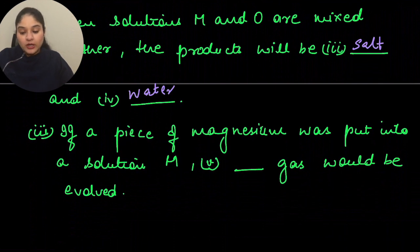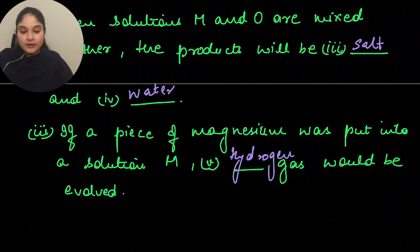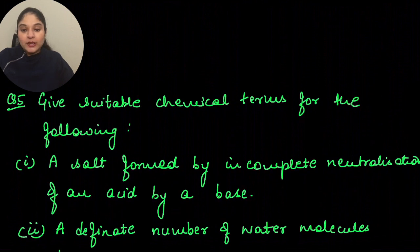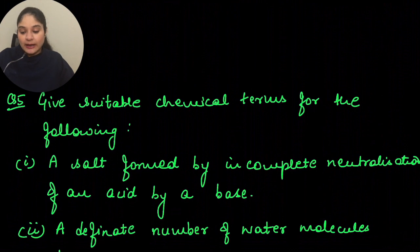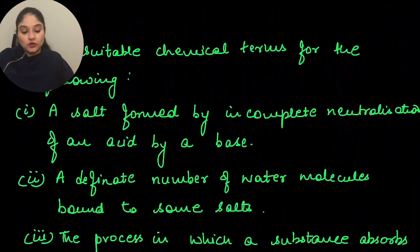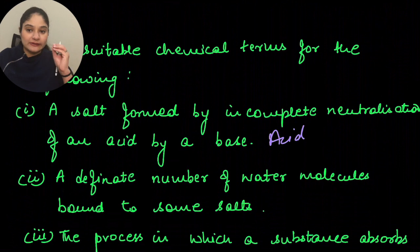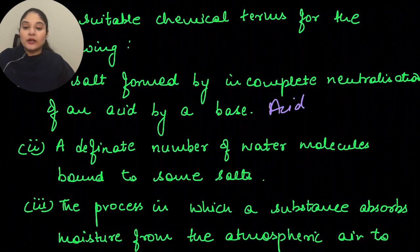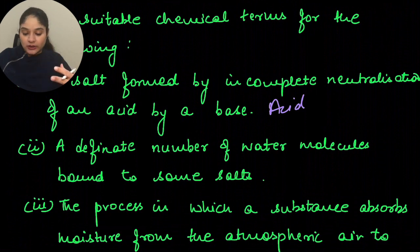Give suitable chemical terms for the following. First: a salt formed by incomplete neutralization of an acid by a base — this is an acid salt, because acid salts always have one hydrogen remaining due to incomplete neutralization. Second: a definite number of water molecules bound in some salts — this is water of crystallization.